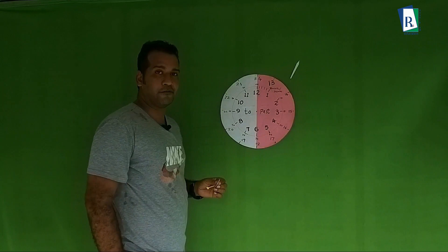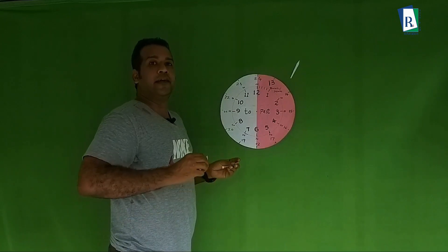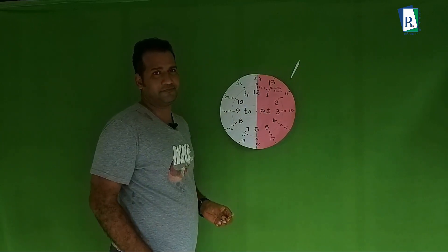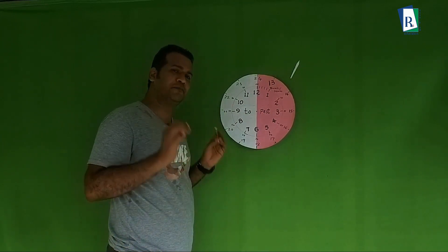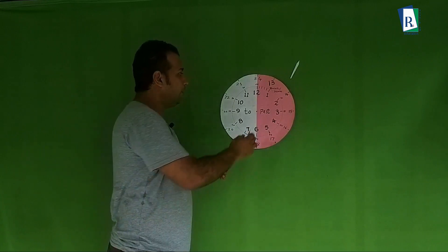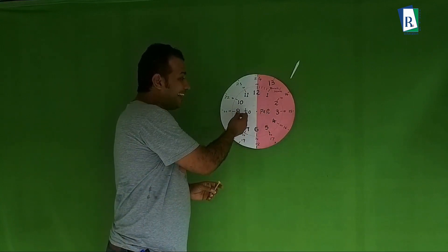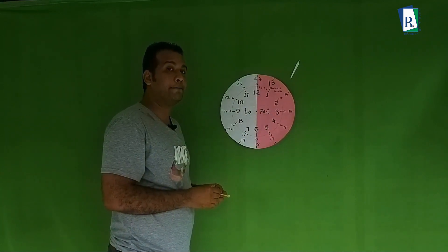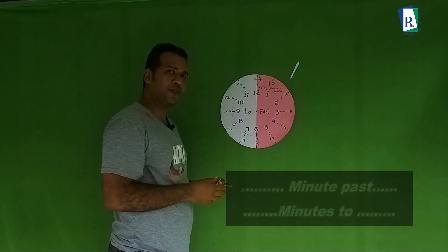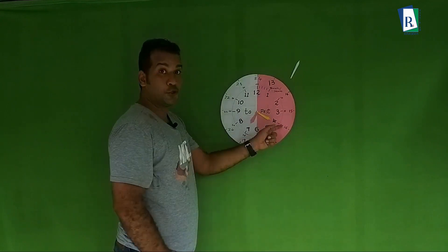In the pink part I have written 'past', and in the white part I have written 'to'. While reading the hour, no change, but while reading the minute we have to use this. While reading a time, first preference for minute — if the minute hand is at this part (pink) we say 'minutes past', if the minute hand is at this part (white) we say 'minutes to'. Here are some examples: minute hand at the four, that means 20 minutes.